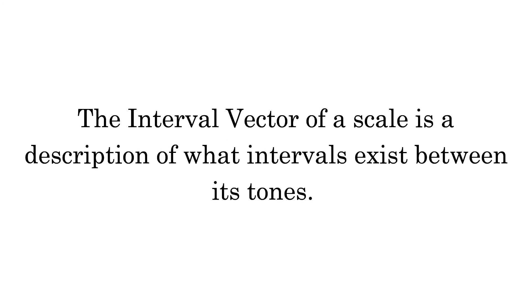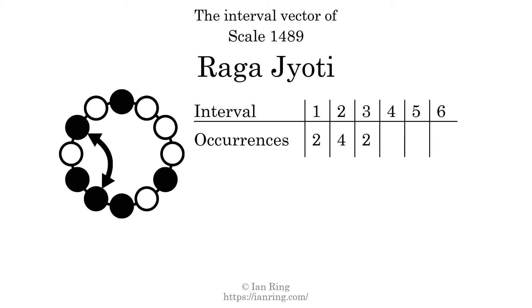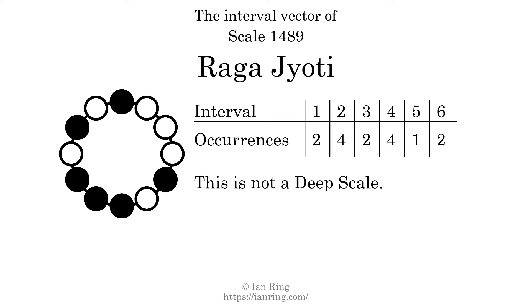The interval vector of a scale is a description of what intervals exist between its tones. There are 2 intervals with the size of 1 semitone. There are 4 intervals with the size of 2 semitones. There are 2 intervals with the size of 3 semitones. There are 4 intervals with the size of 4 semitones. There is 1 interval with the size of 5 semitones. There are 2 intervals with the size of 6 semitones. Each interval does not appear in this scale a unique number of times, so this is not a deep scale.